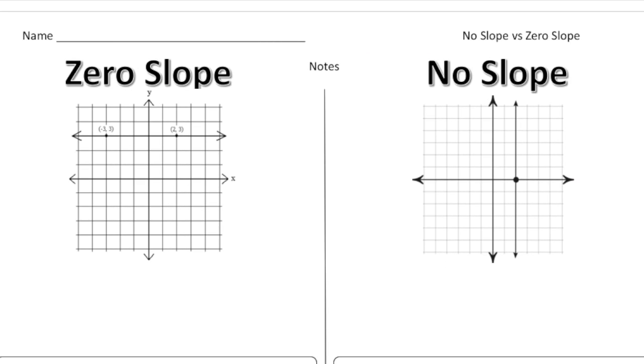So here we have something called zero slope and no slope. And zero slope is a line that's horizontal. There's no rise to it at all. All it is is a straight line across.